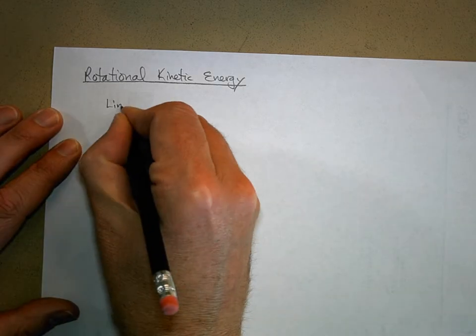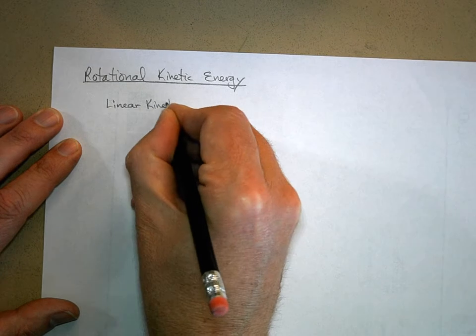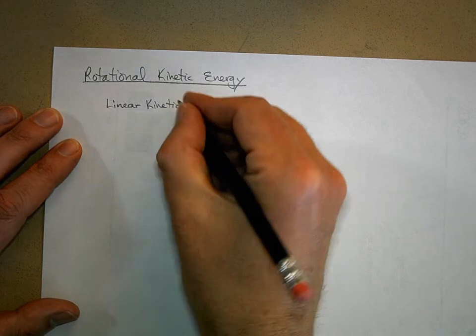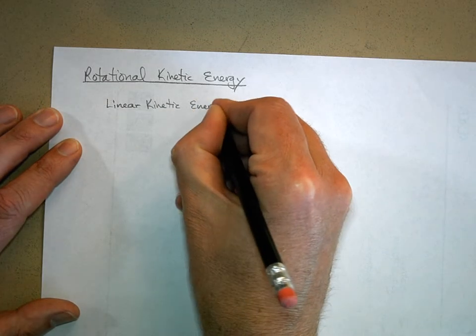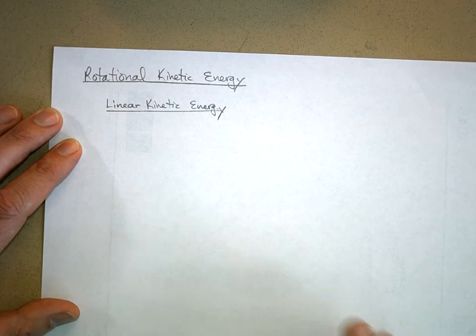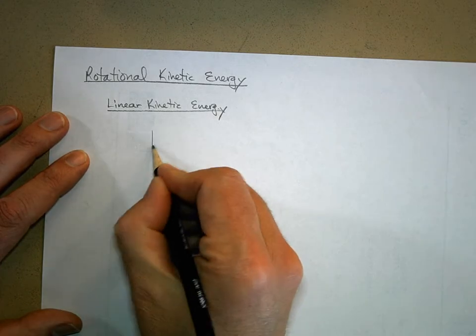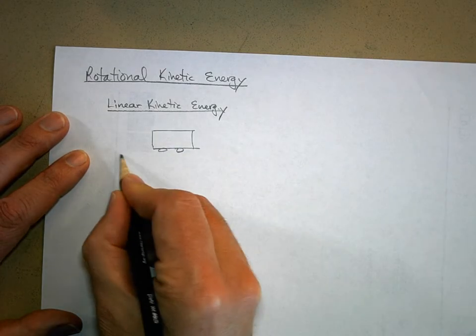Let's talk about rotational kinetic energy. Let's review how we define linear kinetic energy and then connect that to rotational kinetic energy. When we had linear kinetic energy — we just called it kinetic energy before — we're going to make that distinction now. To do it simply, let's do some work on a crate with wheels on it, no friction, no losses.